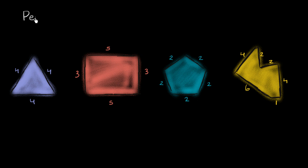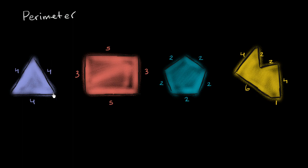When people use the word perimeter in everyday language, they're talking about the boundary of some area. And when we talk about perimeter in math, we're talking about a related idea. But now we're not just talking about the boundary — we're actually talking about the length of the boundary. How far do you have to go around the boundary to essentially go completely around the figure, completely go around the area?